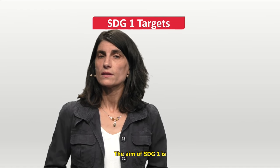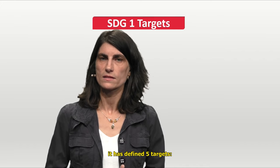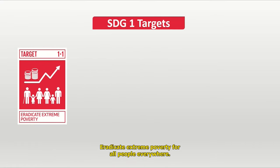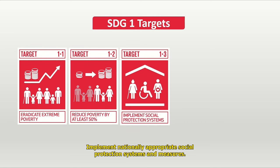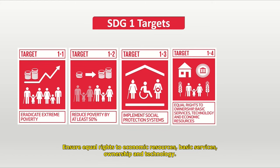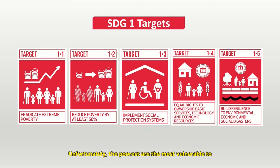The aim of SDG 1 is to end poverty in all its manifestations. For this purpose, it has defined five targets: eradicate extreme poverty for all people everywhere; reduce by at least half the proportion of people of all ages living in poverty; implement nationally appropriate social protection systems and measures; ensure equal rights to economic resources, basic services, ownership, and technology; and build resilience to climate-related extreme events, as the poorest are the most vulnerable to such events.